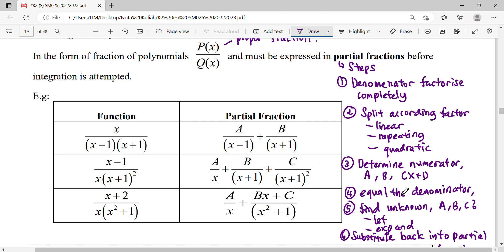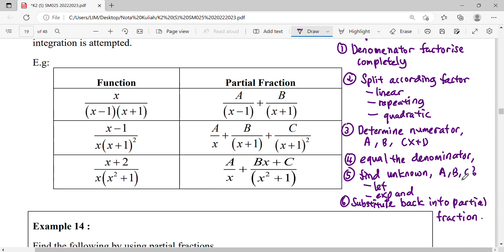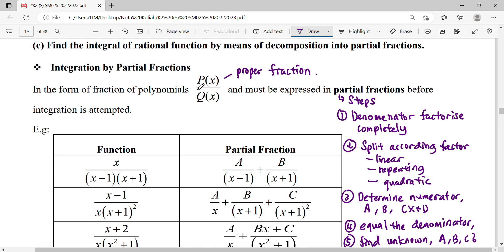Then we're going to equate the denominator and find the unknown for the constants A, B, C here. Then we substitute back to the partial fraction. This is how we express our fraction to become partial fractions.